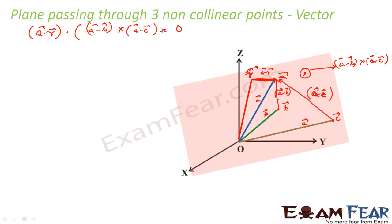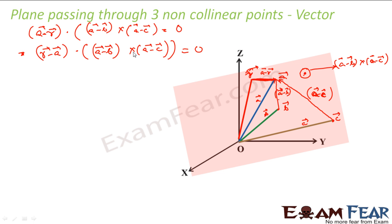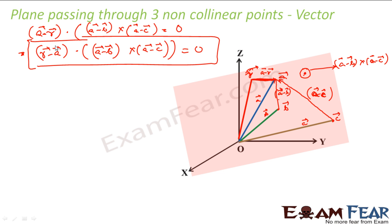And this is the equation of the plane passing through three non-collinear points. A minus R doesn't look good, so I'll make it R minus A — it makes no difference since it equals 0. So we say: R minus A dot (A minus B vector cross A minus C vector) equals 0. This is the equation of the plane which passes through three points A, B, and C.